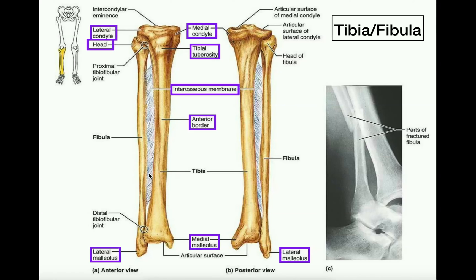Just like in the case of the radius and ulna, you can only see the interosseous membrane if the bones are together. If they're separate models you can take apart, you won't see the interosseous membrane.